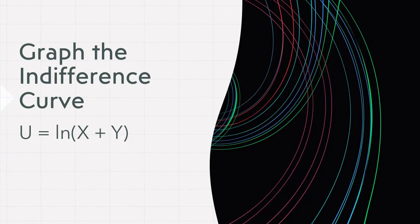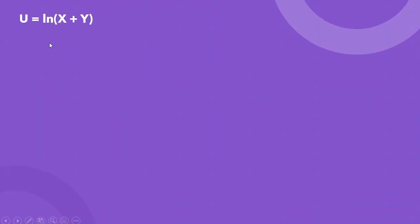In this video, we're going to graph the indifference curve for u, utility equals the natural log of x plus y. So here's our utility function. We're going to graph the indifference curve for utility equals the natural log of 20.